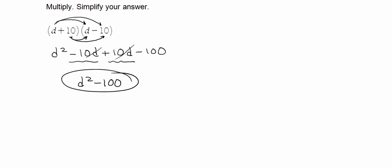So instead of actually going through the entire process, if you notice that you have a conjugate, if you have two binomials that are conjugates of each other, you can simply take, so let's go back and we'll say we have (d + 10)(d - 10).